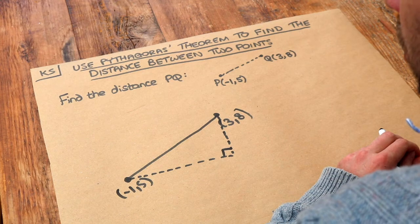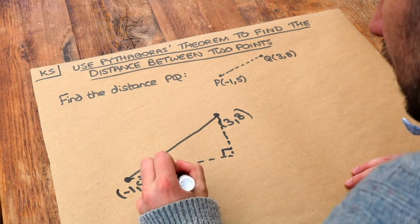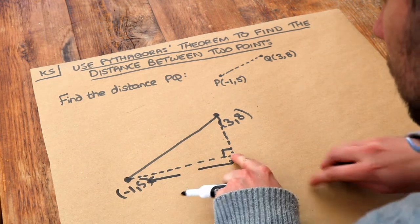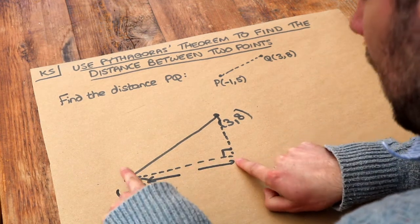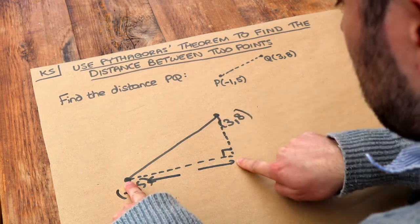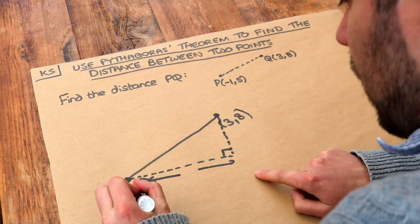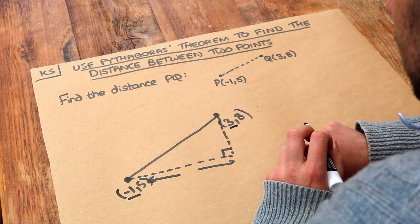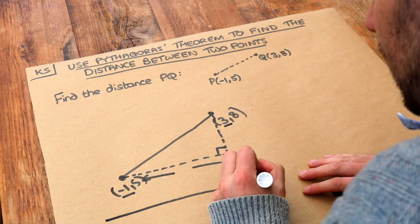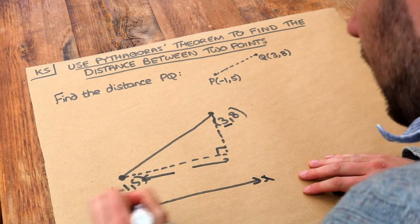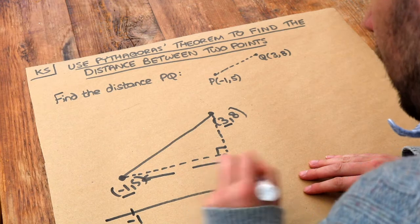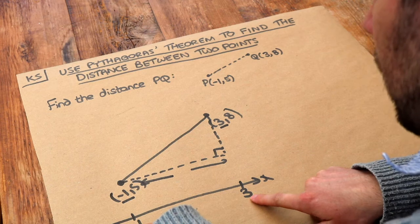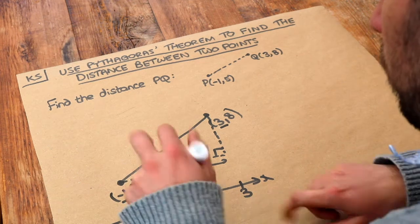Now let's think what we know about the lengths of this triangle. Can you see that this length here between this point and this point is the difference between the x value of this point and the x value of this point? So you can see the x value of this point is minus 1, the x value of this point is 3. So you can imagine looking along the x-axis, you've got minus 1 here, you've got 3 here along the x-axis and you can see that that distance is a difference between minus 1 and 3. What's the difference between minus 1 and 3? Well it's 4.